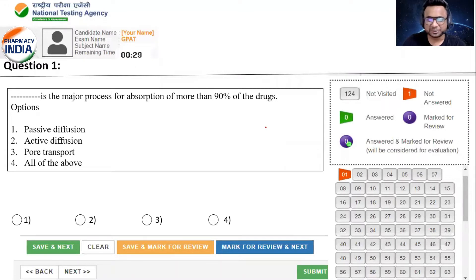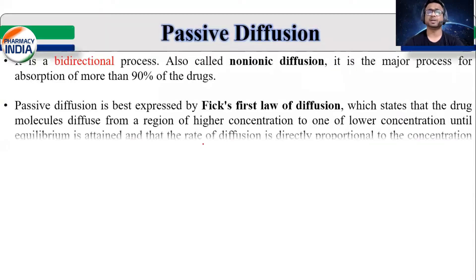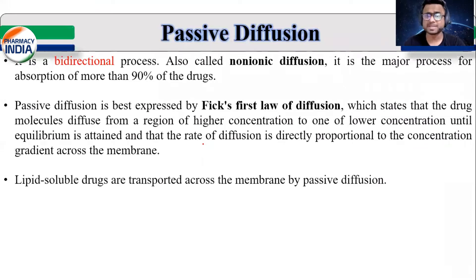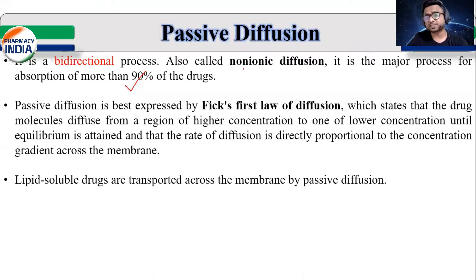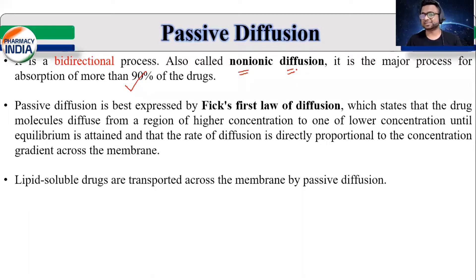तो ये रहा answer. It is Passive Diffusion. Maximum of the drug जो भी हम consume करते हैं, उसमें से 90% से भी जादा drug Passive Diffusion process के थूरू हमारे body के अंदर absorb हो जाता है. तो Passive Diffusion process किस टाइप में आती है? Non-Ionic Diffusion. मतलब जो drugs non-Ionizable है, जिन drugs का Ionization body में easily नहीं होता है, वो सारे drugs Passive Diffusion के थूरू हमारे blood के अंदर enter कर पाते हैं. ये ऐसी process है जो Maximum of the drug follow करते हैं.